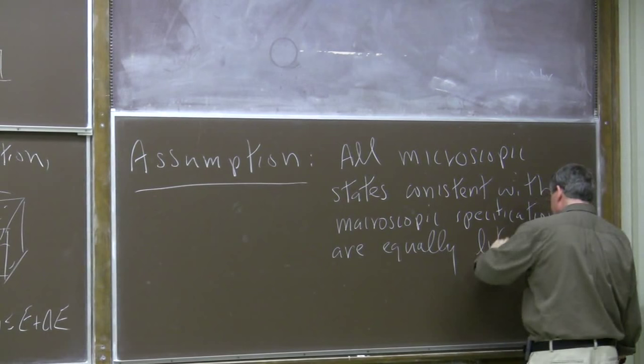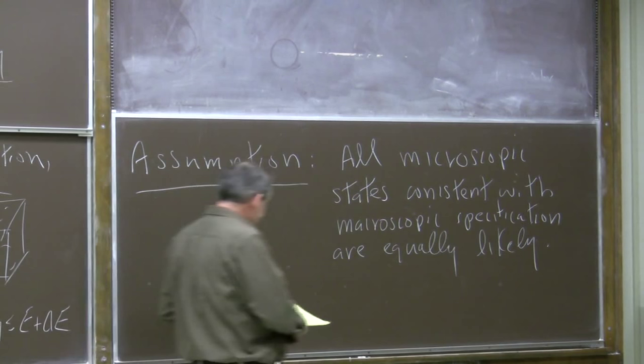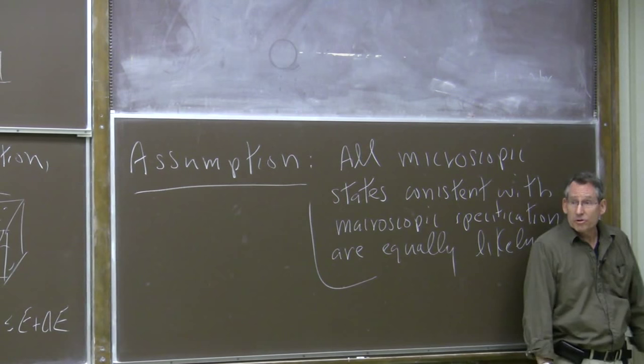We're going to rely on an assumption, which I'm not really going to justify from first principles because doing so is actually not easy. So let's be honest and state it as an assumption: all microscopic states which are consistent with our macroscopic specification — in this case, our statement that the total energy is in a certain range — are equally likely. It's a very egalitarian, democratic principle.